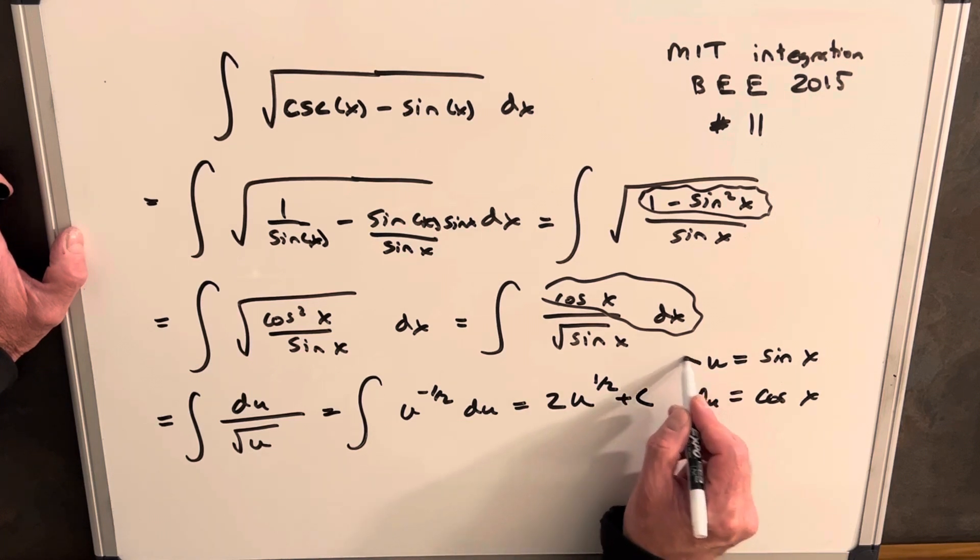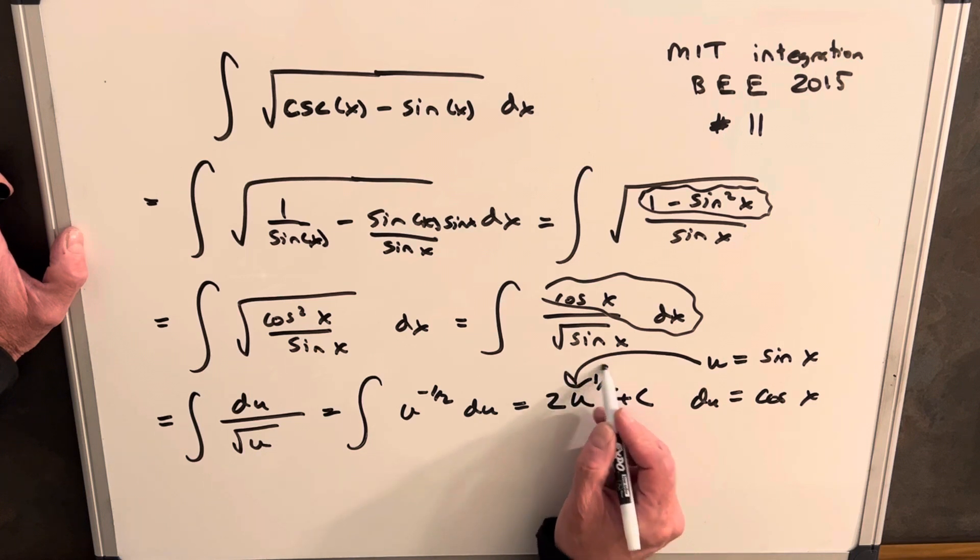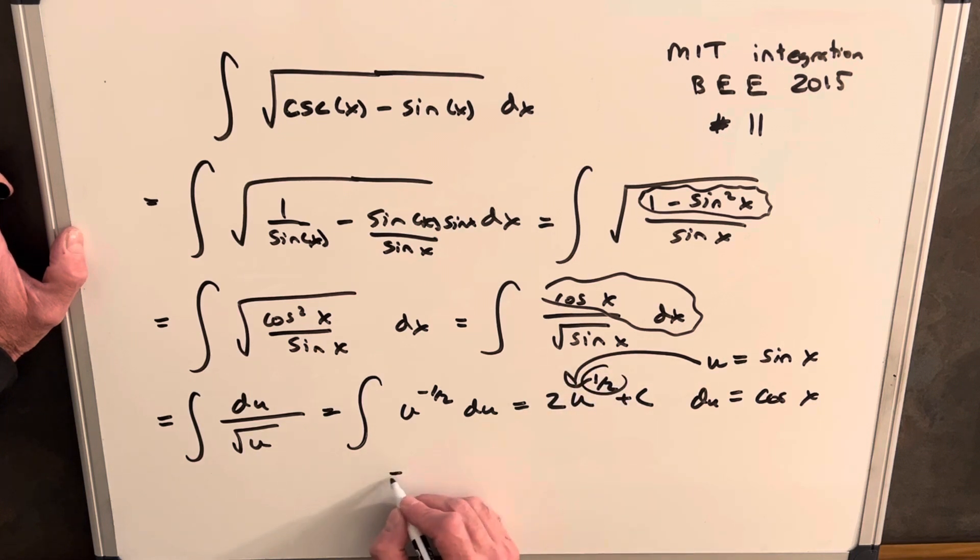Then we can do our back substitution. But let's rewrite this half power as square root. So for our final answer, we're going to have 2 times the square root of sine x plus c.